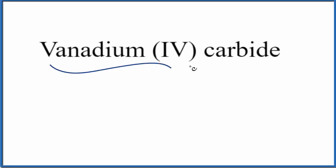Let's write the formula for vanadium carbide. The first thing we look at, we see vanadium, that's a metal, and then carbon, that's a non-metal. So we're going to treat this as an ionic compound.